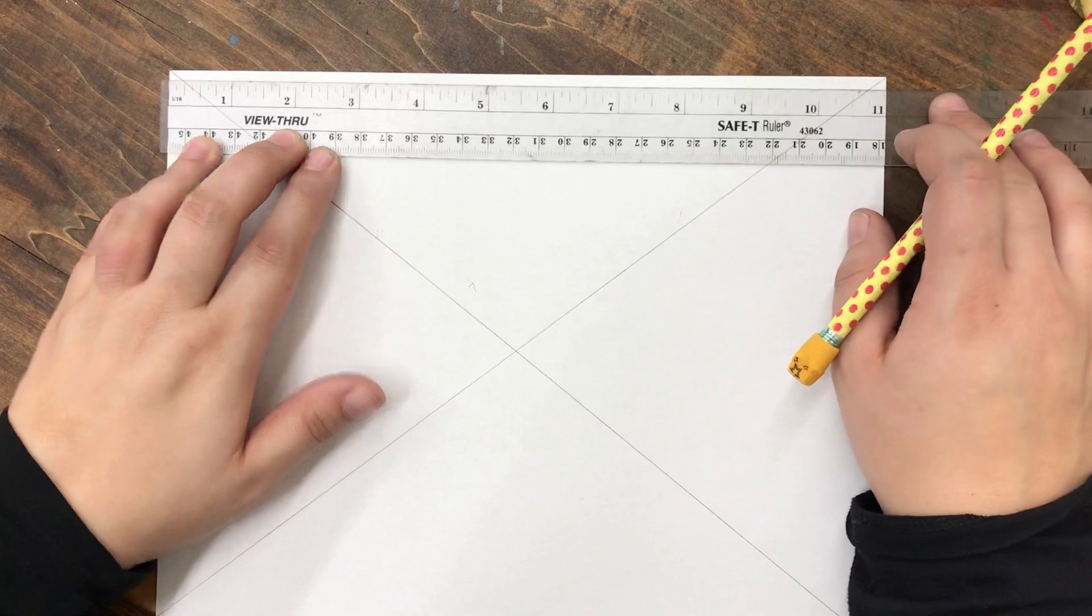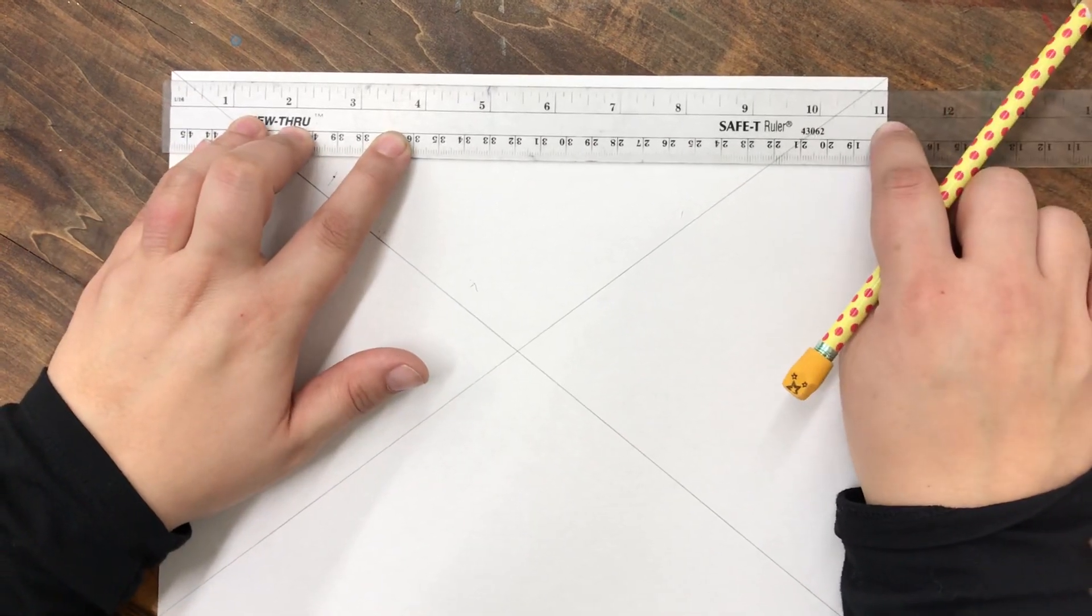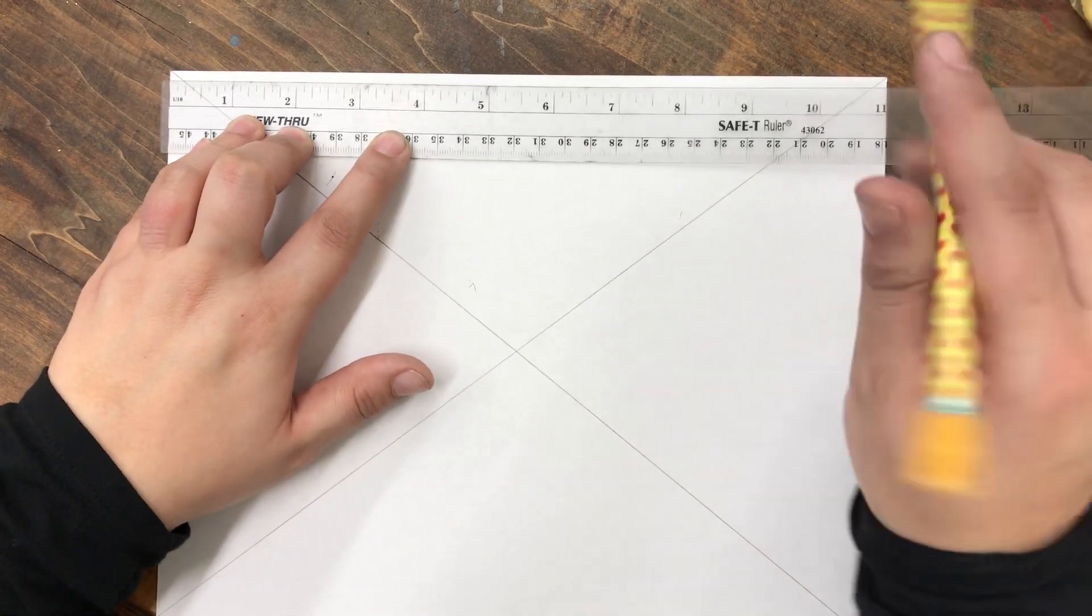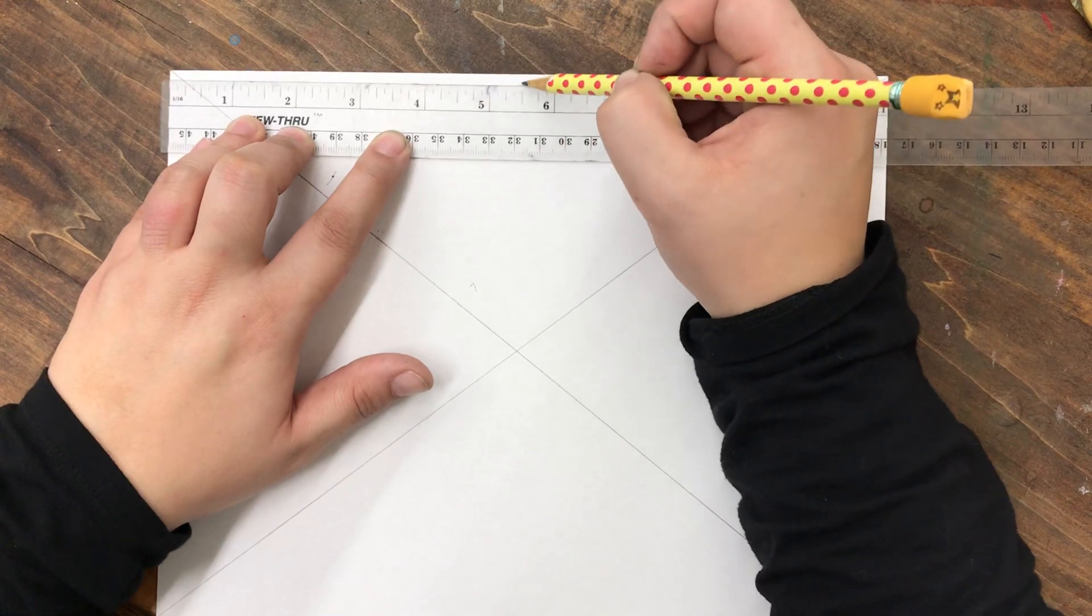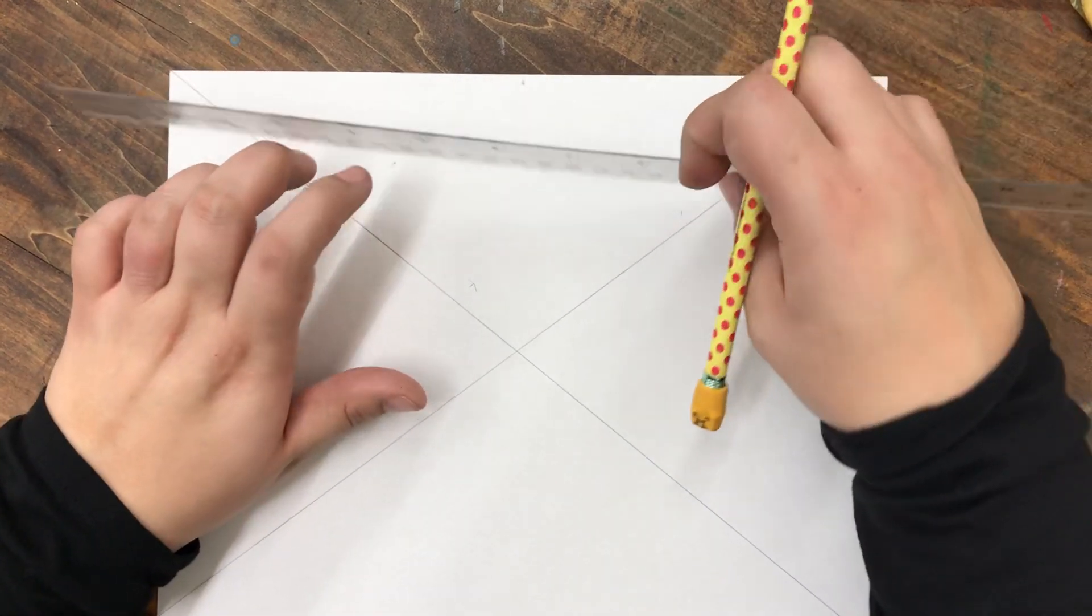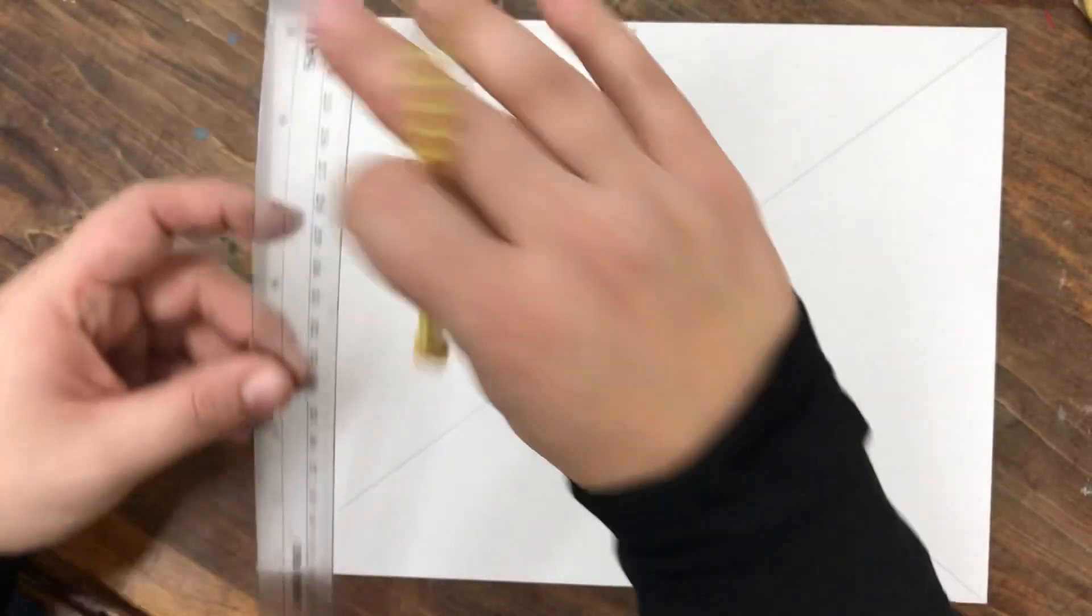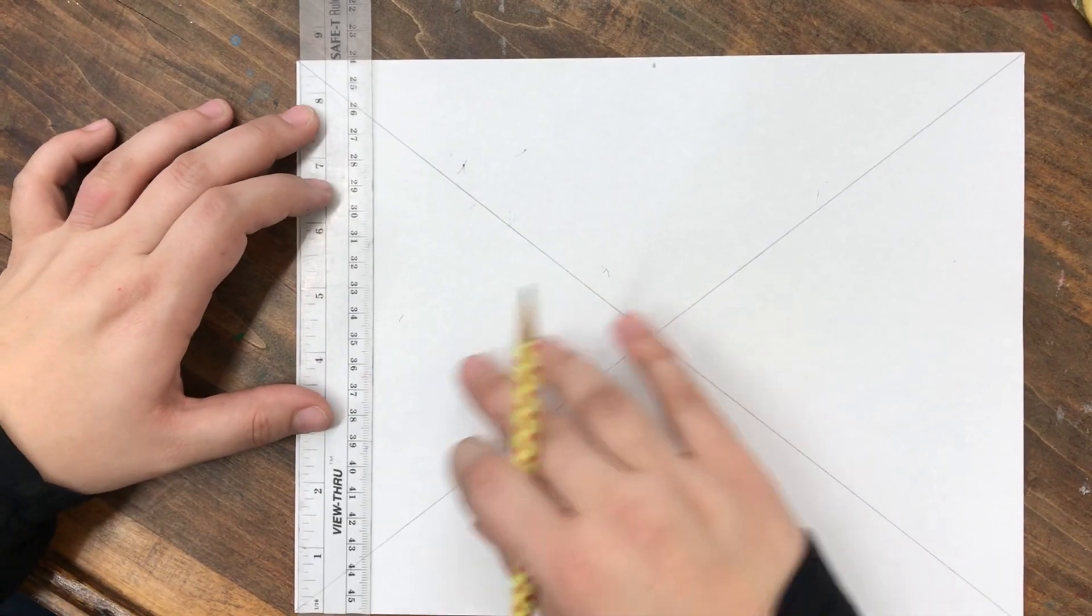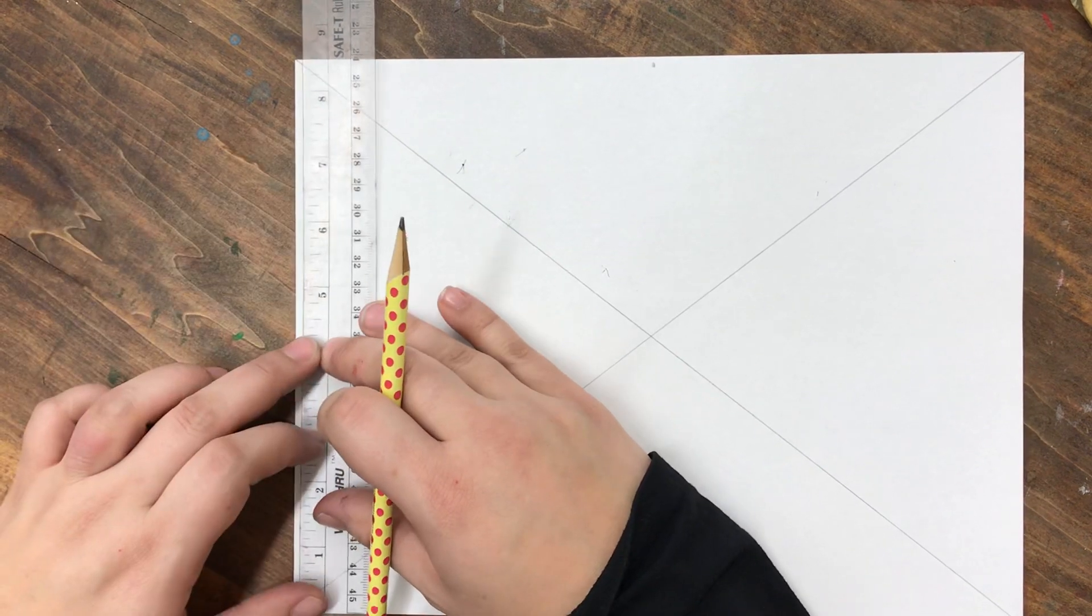This paper is 11 inches long. If you divide 11 in half, you get 5.5 inches, so I'm going to make a mark at the half mark. The paper is 8.5 inches tall.